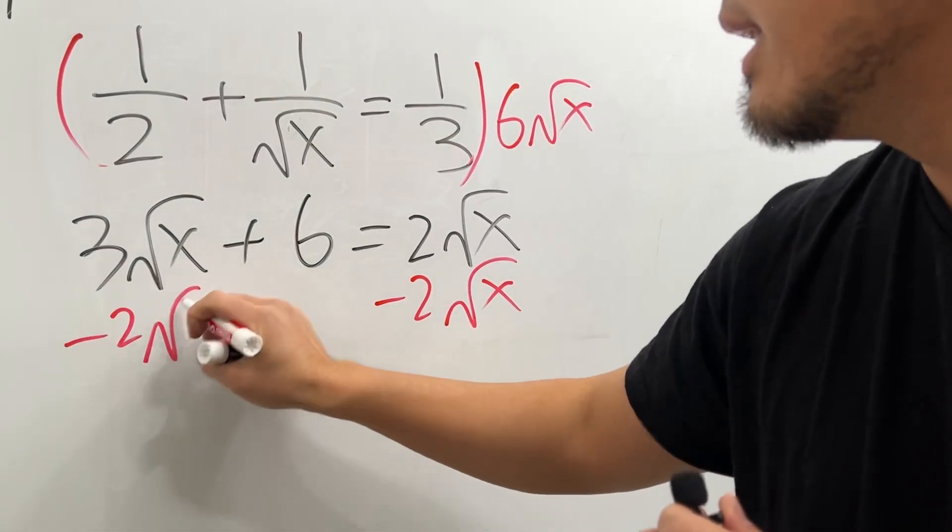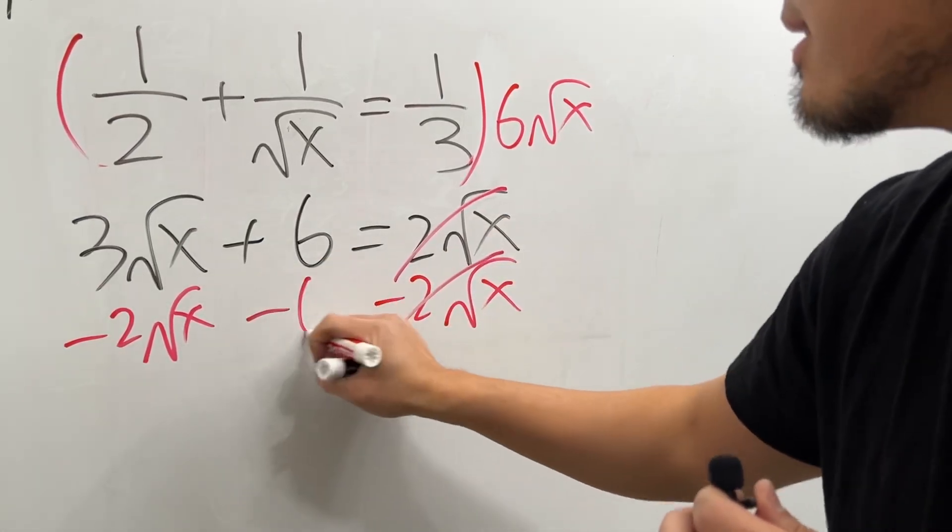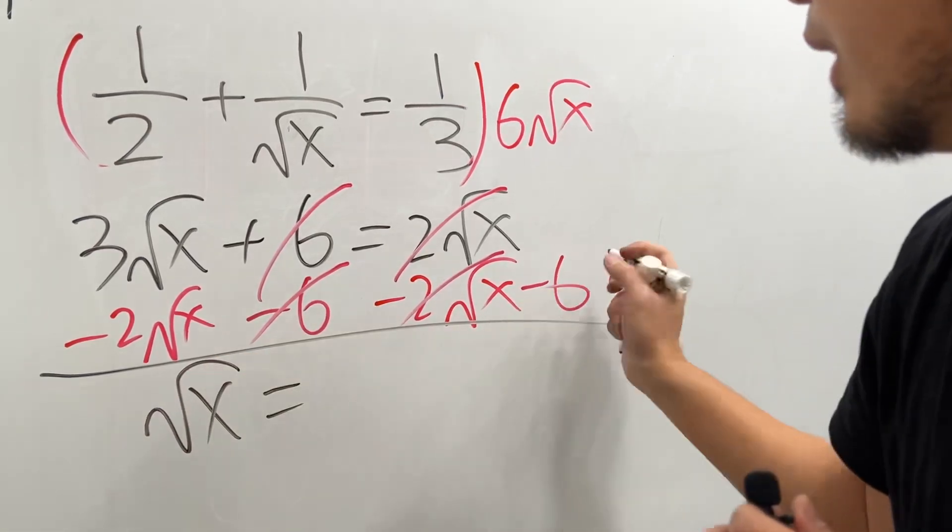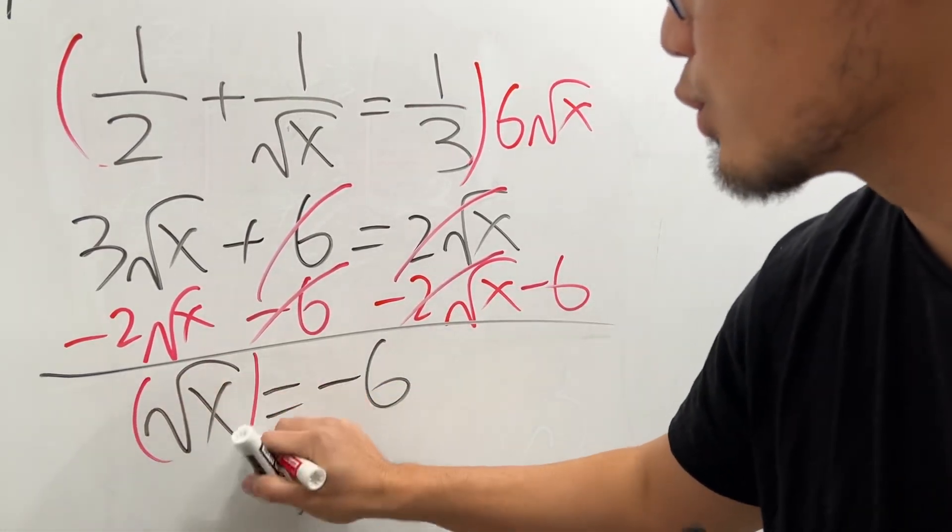Now just minus two square root of x on both sides like this, and you will see that this and that will cancel. And that's minus six on both sides, and this and that will cancel, and on the left hand side we just have square root of x, then that's equal to negative six.